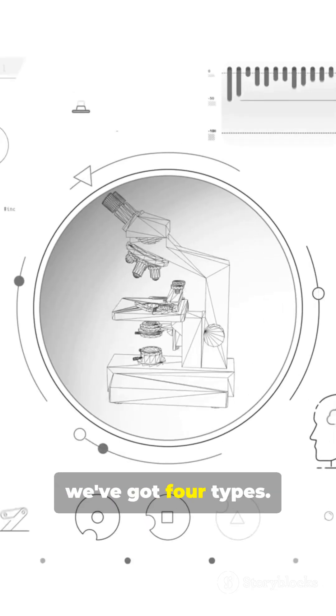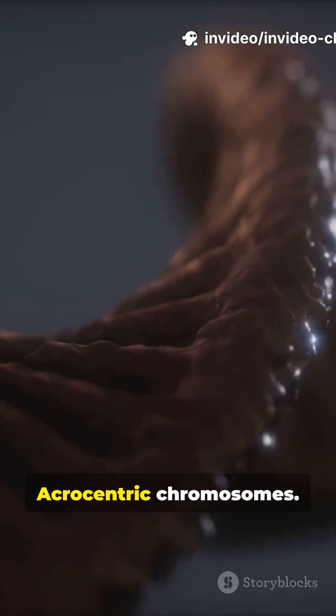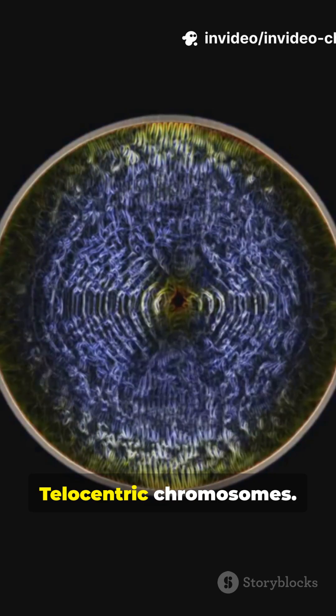By shape, we've got four types. Metacentric chromosomes, submetacentric chromosomes, acrocentric chromosomes, telocentric chromosomes.